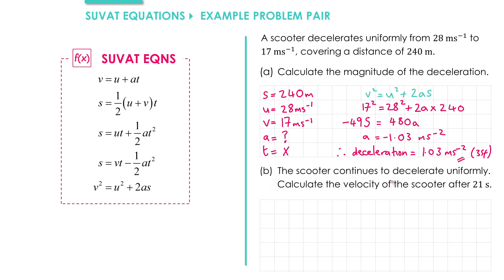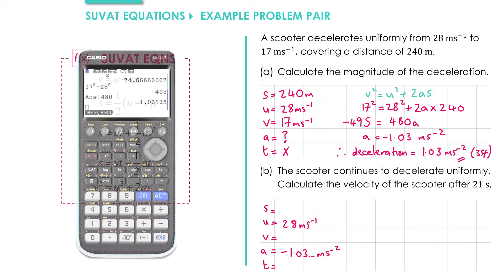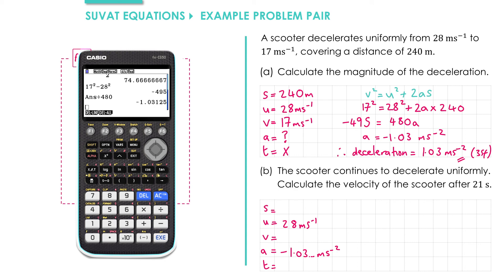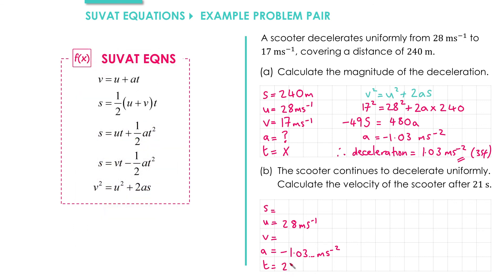In part B, the scooter continues to decelerate uniformly. Calculate the velocity of the scooter after 21 seconds. Let's write down some SUVAT values again. Initial velocity is still 28 meters per second. Acceleration is constant, so we know it's negative 1.03 from before. We'll store this value on our calculator. As I've finished with the last problem, I'll overwrite the value of A as minus 1.03125. The journey takes 21 seconds. We're interested in finding the velocity, and we're not interested in the displacement.